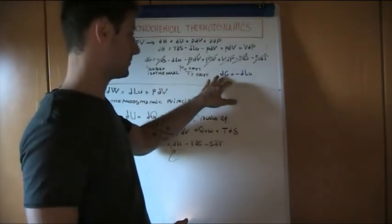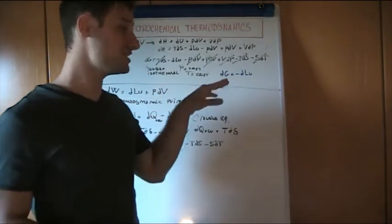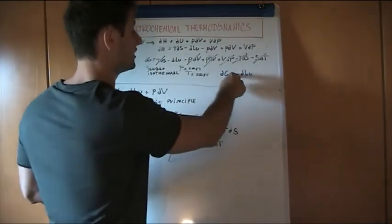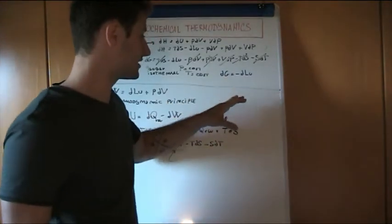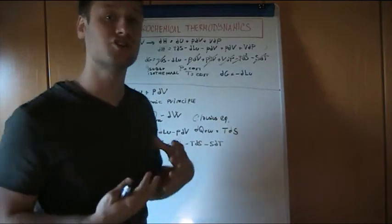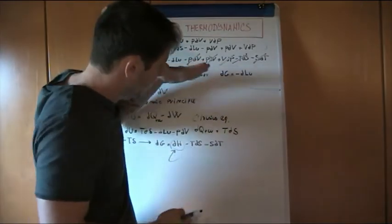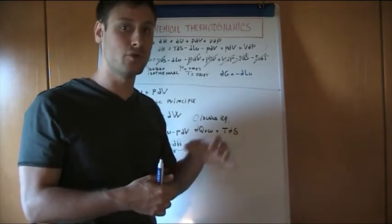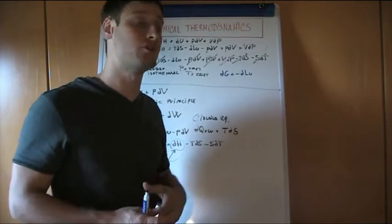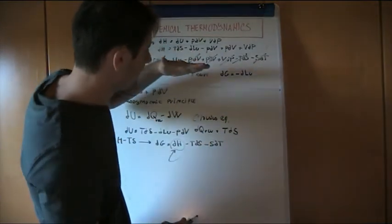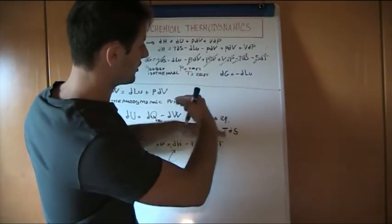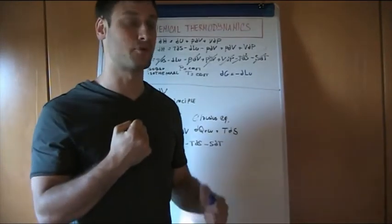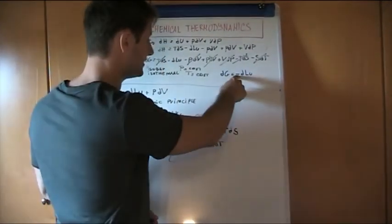This is the same result obtained in the previous video. The negative sign is extremely important: when the reaction is proceeding — so the discharging of the battery is occurring — we are decreasing the free energy of the reagents, because reagents are transformed into products and we are obtaining a more stable system. Due to the development of the reaction the free energy decreases, but at the same time the useful work increases, because we are collecting work from the proceeding of this reaction.